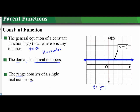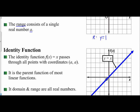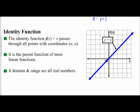Now if we look at linear functions, the identity function for linear would be y equals x, or f of x equals x. It passes through all the points with coordinates (a, a), meaning all the points where x and y are equal to each other. You can see here I have the point (1, 1), x is 1 and y is 1; I have the points (2, 2), (3, 3), and also (negative 1, negative 1), (negative 2, negative 2). So this is the parent function for most linear functions we're going to be working with.